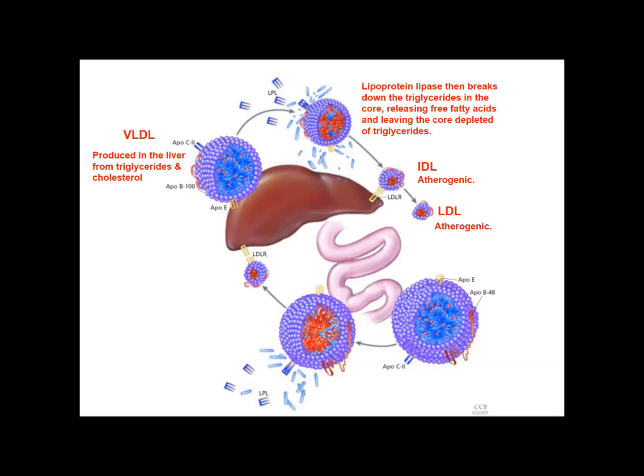So we have a number of atherogenic lipoproteins: VLDL, IDL, and LDL, all of which are atherogenic. In terms of atherogenicity — the likelihood of creating atherosclerotic plaques — it's usually LDL that we hear about, and there's a reason for that. Although all of these lipoproteins have the ability to get under the endothelium and cause problems, it's LDL which has the longest half-life in the circulation.